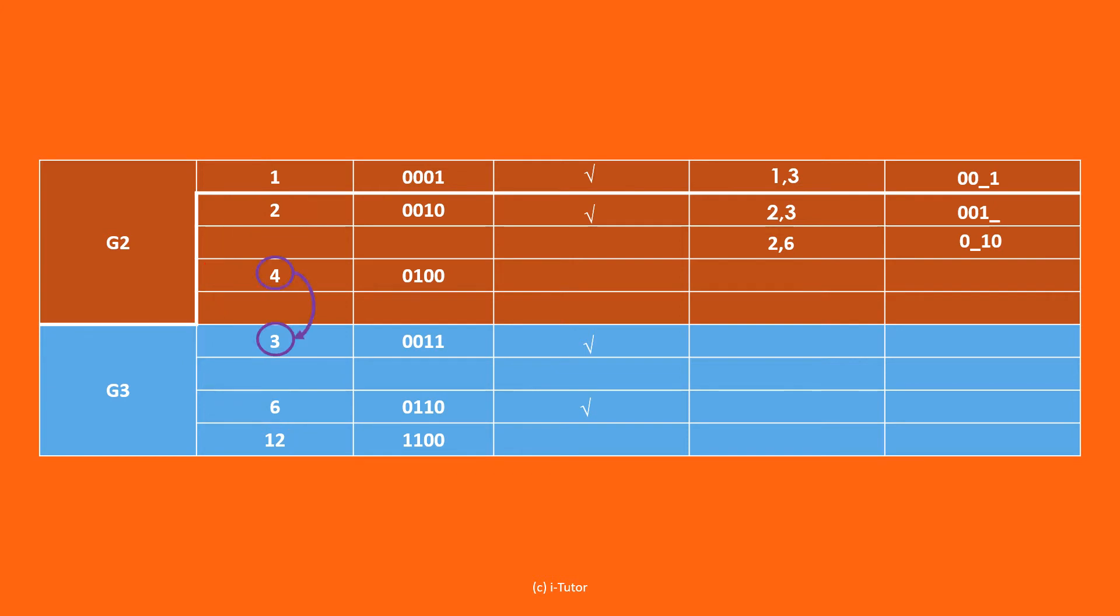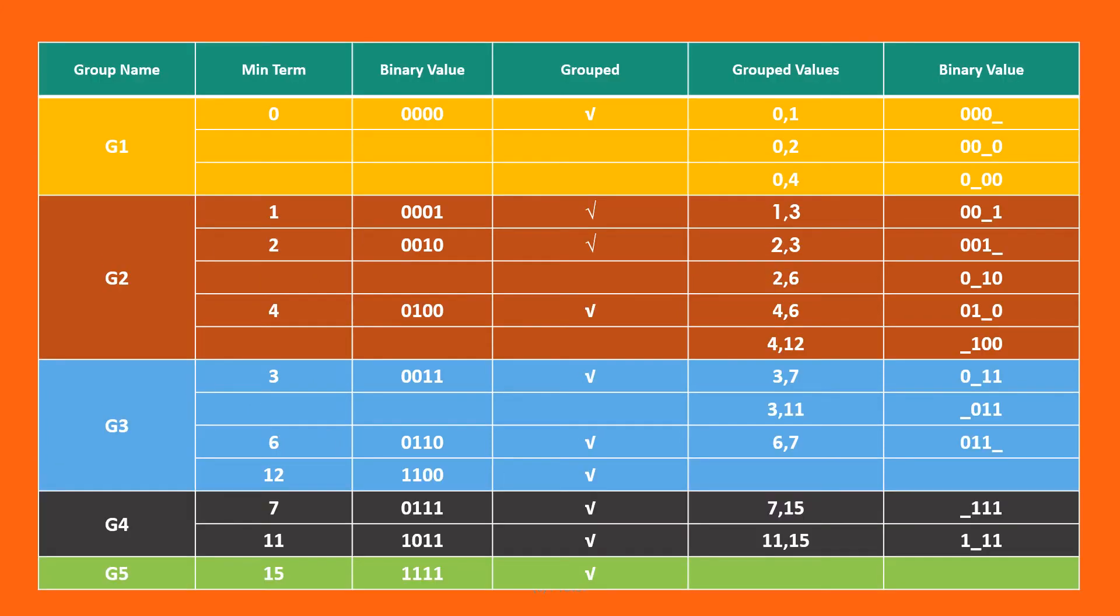Comparison of 4,3 is not possible as more than one position varies. On comparison of 4,6 we get 01 underscore 0. Four with 12 we get underscore 100. The results will look as shown in the table after all the possible elements are grouped together from successive groups.